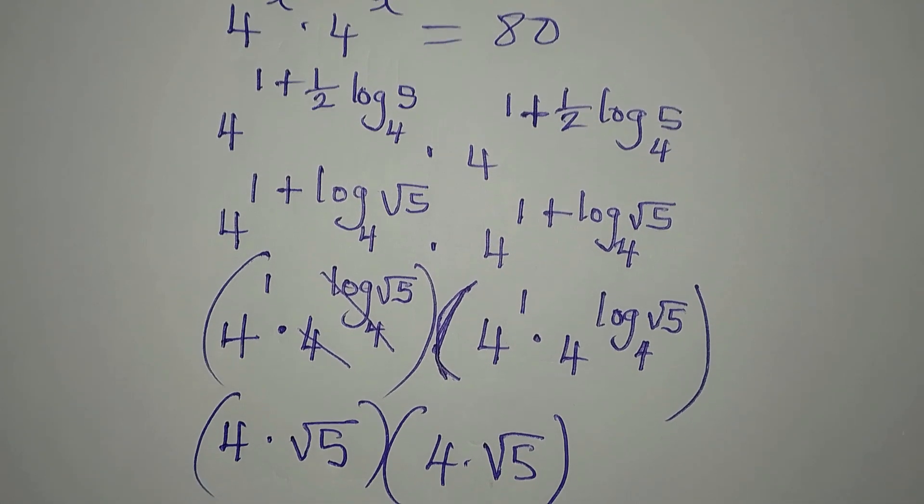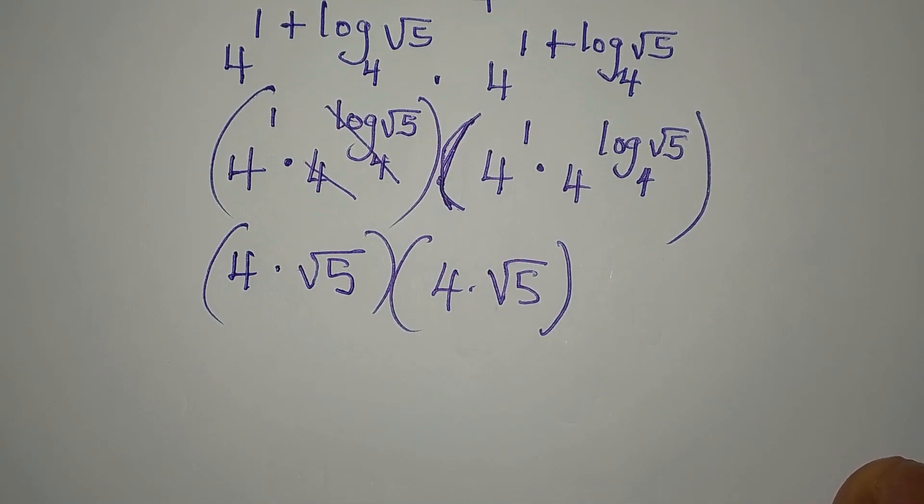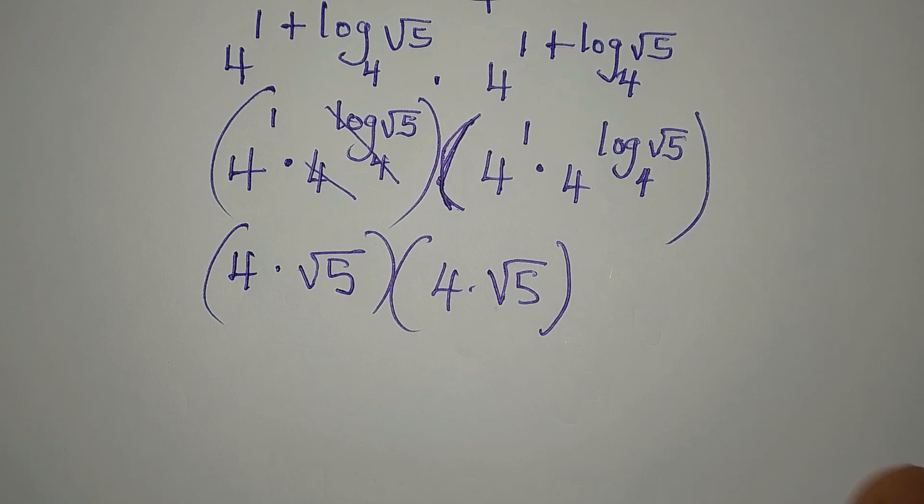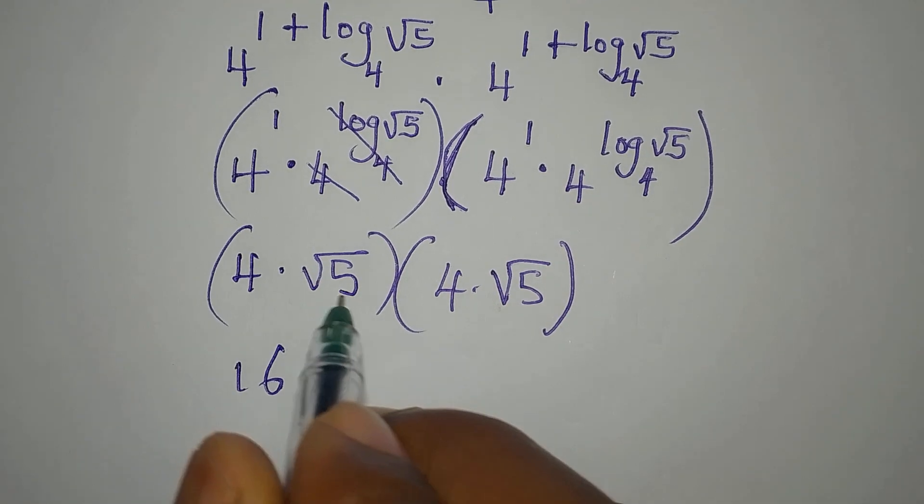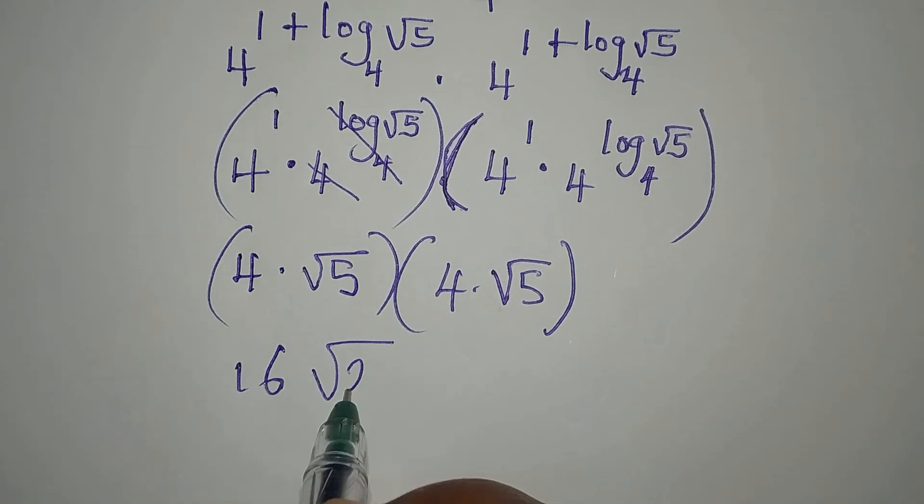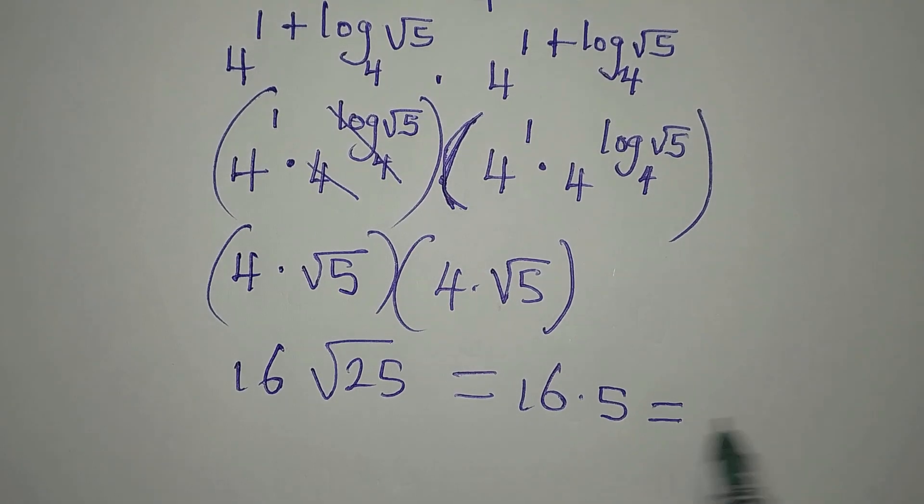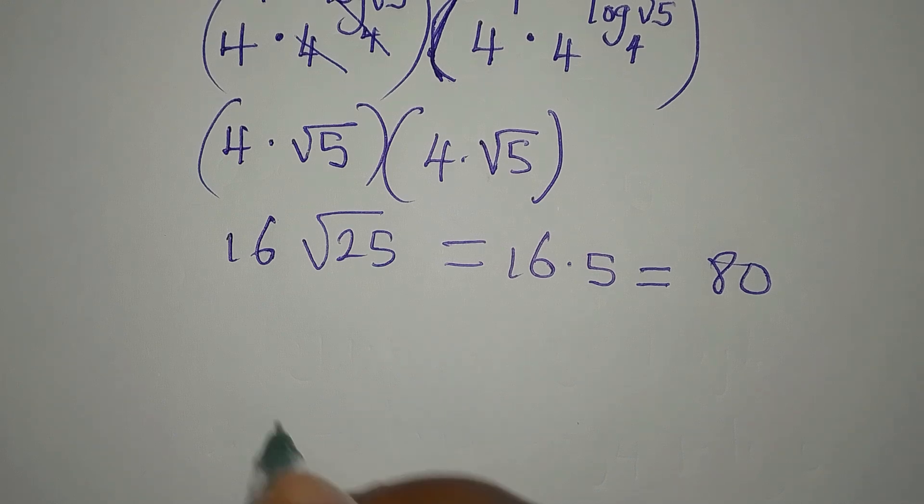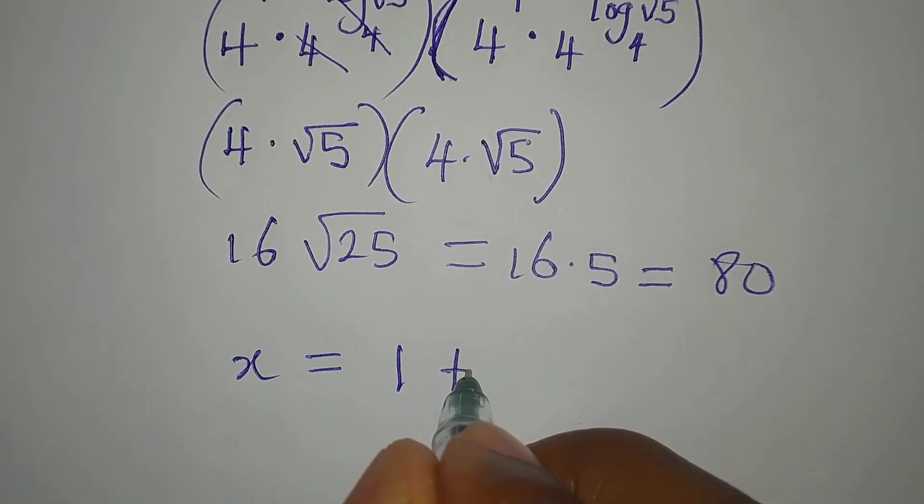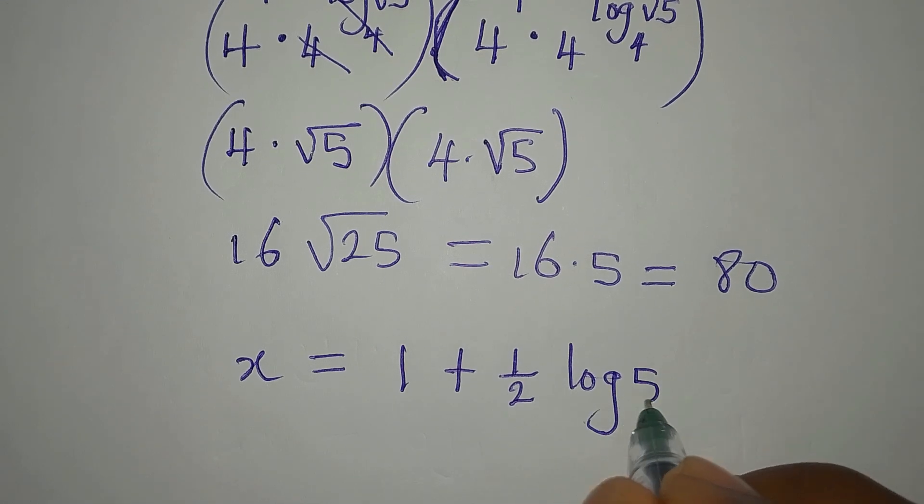Now, let's see if this is going to give us 80 on the other side. 4 times 4 is 16, then root 5 times root 5 will give us square root of 25. And that is 16 multiplied by 5. 16 multiplied by 5 is 80. So this is to confirm that our x is truly 1 plus 1 over 2 log 5 to the base of 4.